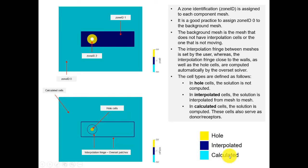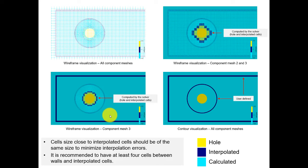We have calculated cells (the full domain solution), interpolated cells (close to walls, created by solver), and overset patches (user-defined, used to interpolate from mesh to mesh). Calculated cells can act as donors or receptors: donors give information to another mesh, receptors receive information. With three meshes, there will be several donor-receptor relationships in our overset topology.